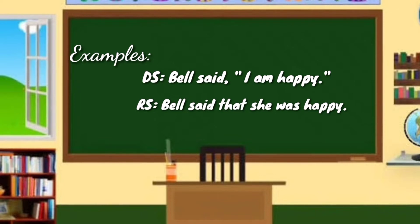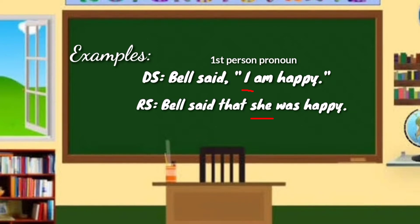In transforming pronouns from direct to reported speech, you need to change the perspective or point of view. In this sample, the first person pronoun 'I' in the direct speech is changed to 'she,' a third person pronoun in the reported speech, because Bell is the subject of the reporting clause and Bell is female, requiring a third person feminine pronoun.